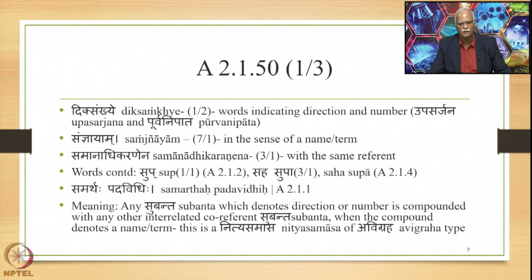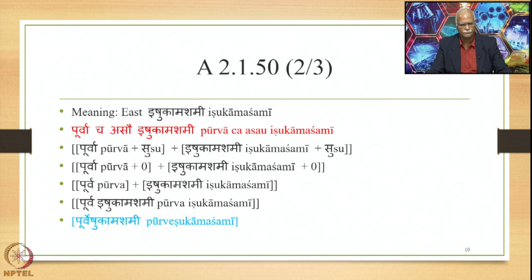The overall meaning of the sutra Diksankhye Saudhnyayam is: any Subanta denoting direction or number is compounded with another interrelated co-referent Subanta when the compound denotes a name or term. This is a Nitya Samasa of a Vigraha type. For example, 'East Ishukamashami' — Ishukamashami is the name of a particular place, and its eastern part is referred to as East Ishukamashami, used as a name.